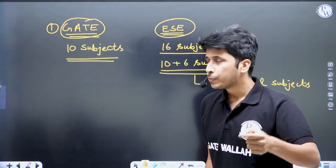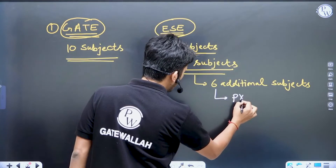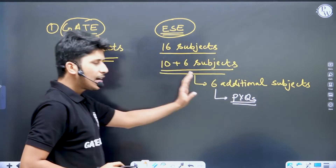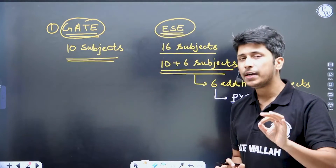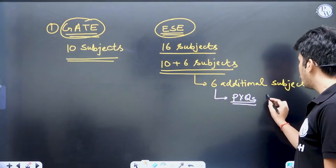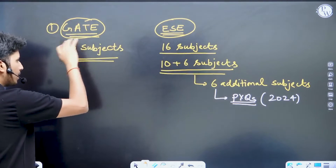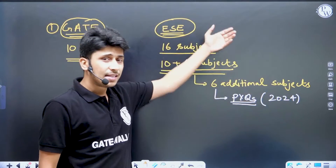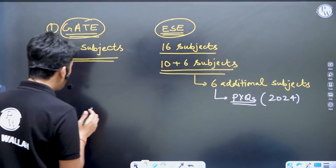If you are preparing for ESC 2024 and GATE 2024, for these 6 additional subjects you only have to go through their previous year questions (PYQs). You are already preparing the 10 GATE subjects, so adding PYQs of these 6 additional subjects will complete your ESC preparation. This approach is sufficient for 2024 aspirants.